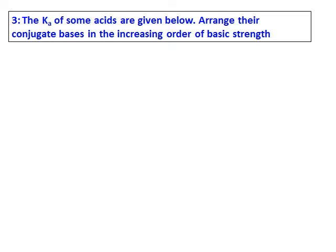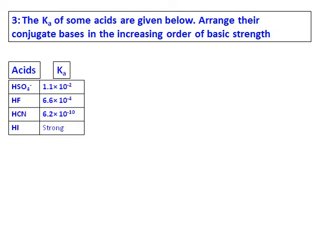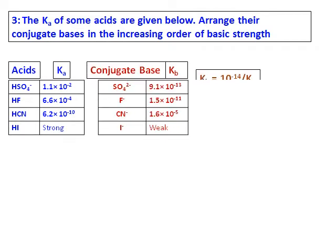The Ka of some acids are given below. Arrange their conjugate bases in the increasing order of basic strength. The acids given are HSO₄⁻, HF, HCN, and HI. And the first thing we will do is, let's calculate the Kb of their conjugate bases. And the conjugate bases of those acids are listed, and the Kb's are also listed.